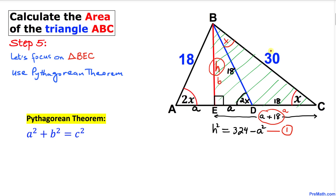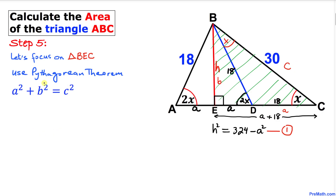Filling in the blanks: (A + 18)² + H² = 30². Let's isolate H²: H² = 30² − (A + 18)².